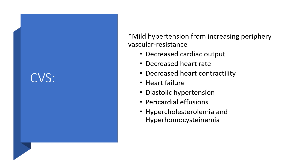In the cardiovascular system, we can have mild hypertension from increased peripheral vascular resistance. There is likelihood of decreased cardiac output, decreased heart rate, and decreased cardiac contractility — all of which can lead to heart failure. Diastolic hypertension is possible with pericardial effusions, and there will be hypercholesterolemia, hyperlipidemia, and hyperhomocysteinemia.